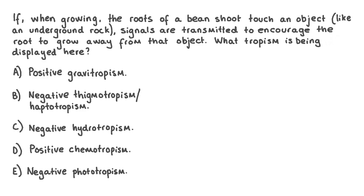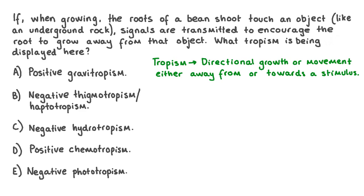Let's try a second practice question. If when growing, the roots of a bean shoot touch an object like an underground rock, signals are transmitted to encourage the root to grow away from that object. What tropism is being displayed here? The options are: positive gravitropism, negative thigmatropism or haptotropism, negative hydrotropism, positive chemotropism, or negative phototropism. The directional growth movement of a plant in response to a stimulus is called a tropism. Tropisms can be negative — growing away from a stimulus — or positive — growing towards a stimulus. Since the root is growing away from the stimulus, this is a negative tropism. Two of the options describe positive tropisms, so these can be ruled out straight away.